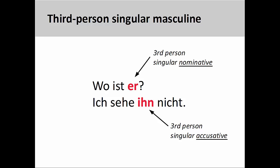Of the third-person forms, the masculine personal pronoun is the only one that changes as it moves from nominative to accusative. In the first sentence, wo ist er? — Where is he? — the personal pronoun is the subject of the sentence, and therefore in the nominative case. In the second sentence, the pronoun is the direct object of the verb sehen, which puts it into the accusative case.